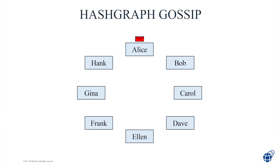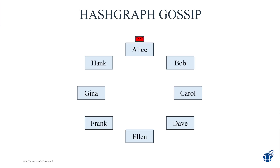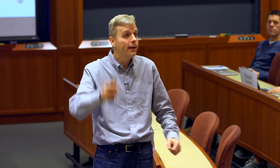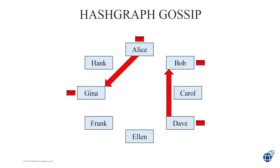Question about what happens if Dave is targeted. If Dave is attacked in the very first step, Alice notices he's not talking and just calls someone else at random — in this case, Gina. Dave not responding doesn't block the message from spreading. We also have digital signatures, so nobody can corrupt a message, and cryptographic hashes tie everything together. There are huge classes of lies you just can't tell in this system.